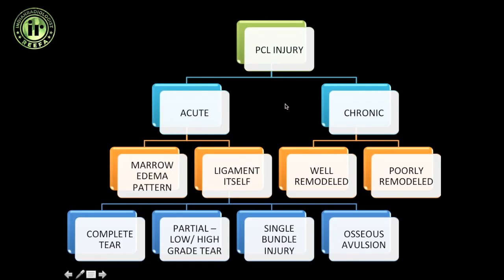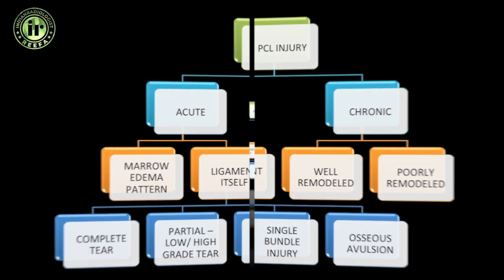Just like ACL injuries, PCL injuries can be acute or chronic. In acute injuries, you need to mention the bone marrow edema pattern and the status of the ligament itself. In chronic injuries, assess whether the ligament is well remodeled or poorly remodeled. PCL injuries that are not full-thickness tears tend to remodel well.